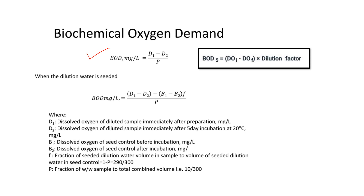Another formula for BOD at 5 days is: DO initial minus DO final, multiplied by the dilution factor. When there is a seeding condition in the wastewater, the BOD formula becomes: BOD = [(DO initial − DO final) − (B1 − B2) × F] ÷ P. Here B1 is the dissolved oxygen under controlled seeding conditions, B2 is the dissolved oxygen after incubation, F is the fraction of seeding of the dilution water, and P is the volume of sample divided by total volume.